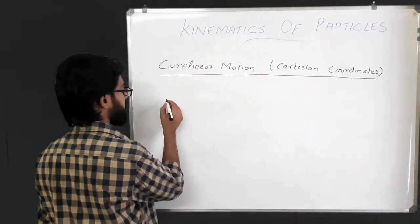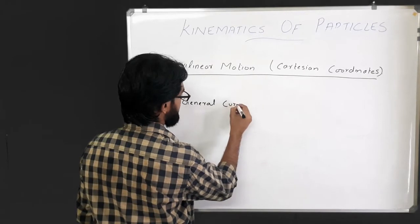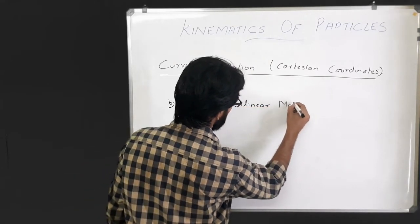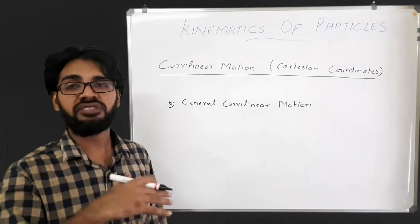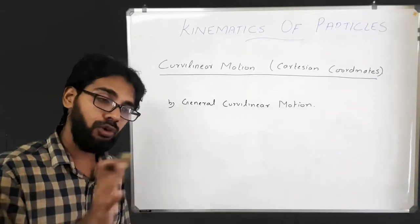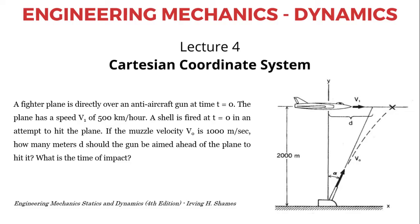In a general curvilinear motion, the equations may be coupled, making it difficult to obtain an analytical solution, and hence we may have to use numerical methods. Let us do a problem: A fighter plane is directly over an anti-aircraft gun at t = 0. The plane has a speed v1 = 500 km/h. A shell is fired at t = 0 in an attempt to hit the plane. If the muzzle velocity v0 = 1000 m/s, how many meters d should the gun be aimed ahead of the plane to hit it? What is the time of impact?